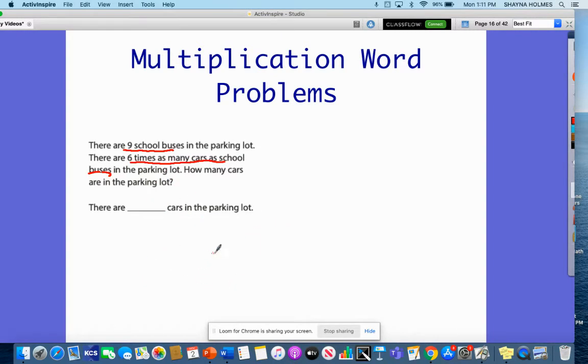So what I'm going to do is I'm going to use a strategy that we saw in our last video. It is using a bar diagram. So right here, this is going to represent the school buses. And then underneath, I am going to draw six more boxes because it said that there were six times as many cars.